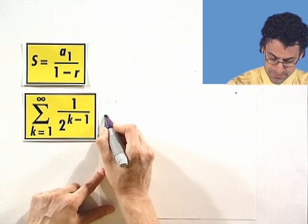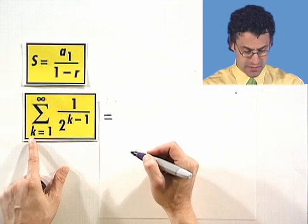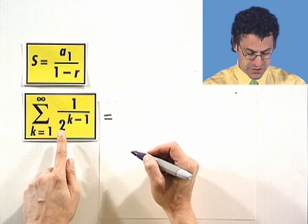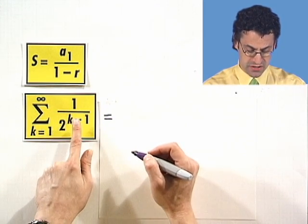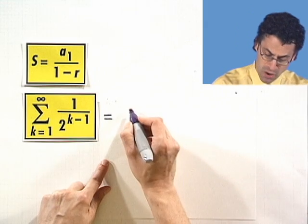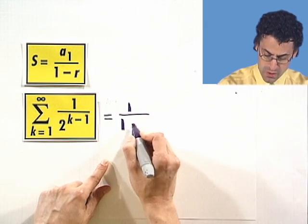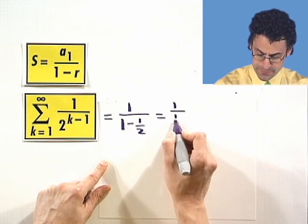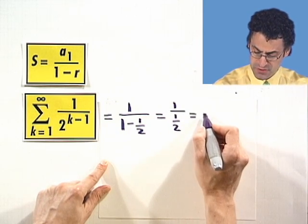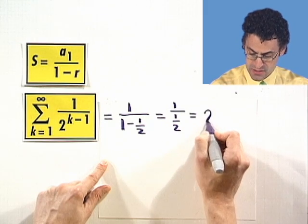I see that the sum is going to be the first term. So what's the first term? Let k equal 1. That's 1 over 2 to the 1 minus 1, which is 0. So 1 over 2 to the 0, which is just 1. So 1 over 1 minus 1 half. Well, 1 minus 1 half is 1 half. When I take the reciprocal and multiply, I see 2.